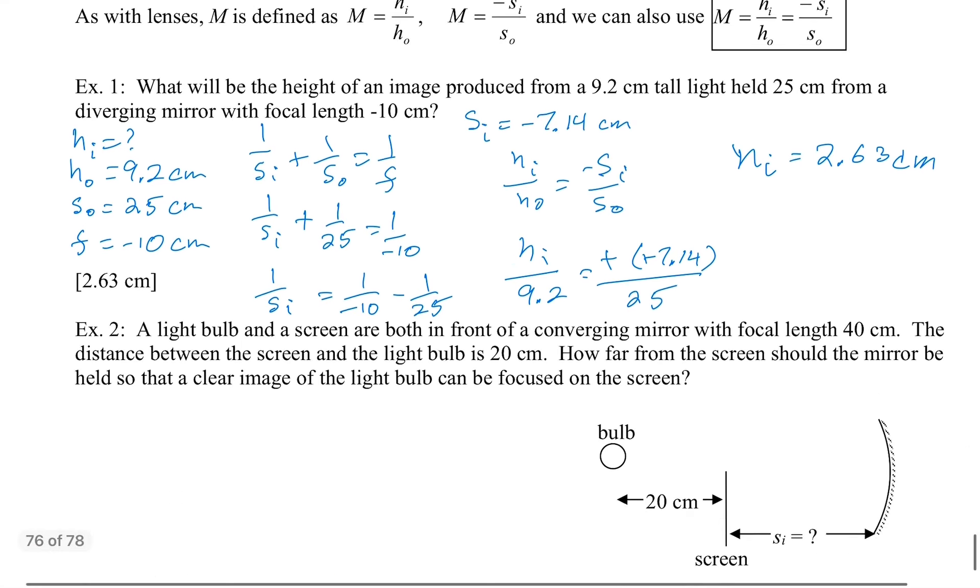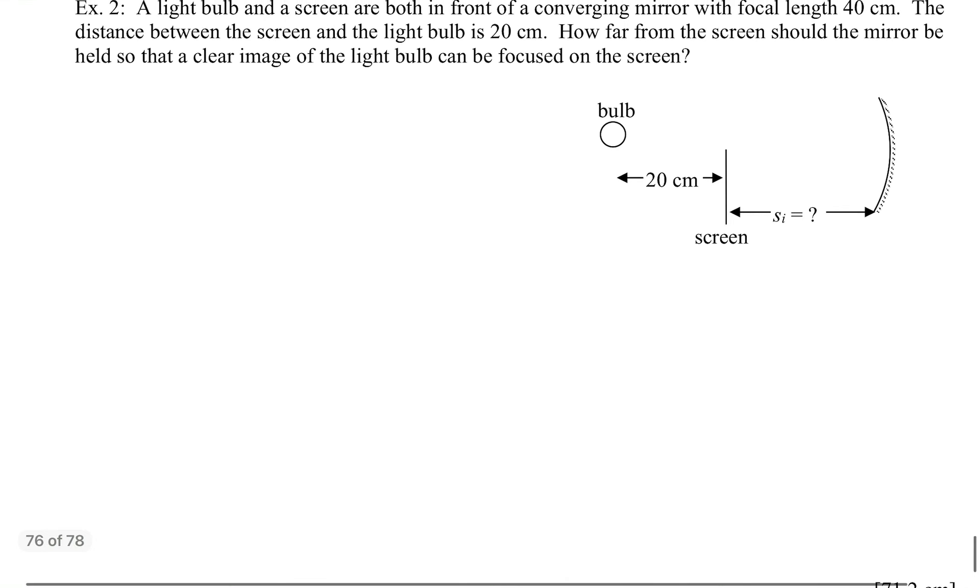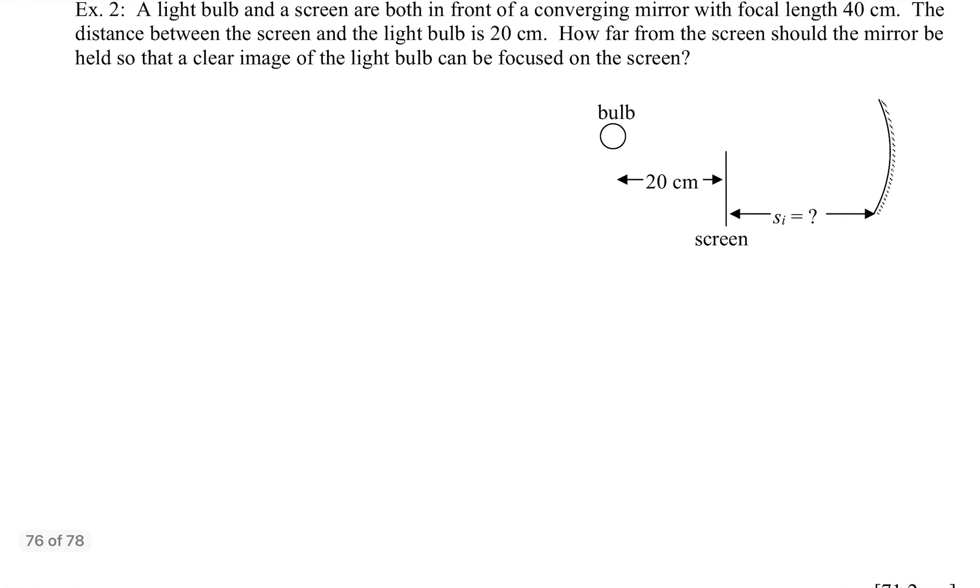A light bulb and a screen are both in front of a converging mirror with focal length 40 centimeters. The distance between the screen and the light bulb is 20 centimeters. How far from the screen should the mirror be held so that a clear image of the light bulb can be focused in the screen? So these two things are fixed, the bulb and the screen. And this mirror, we can move it closer or further away. We can move that mirror to different locations wherever we want in order to get a nice clear image on this screen.